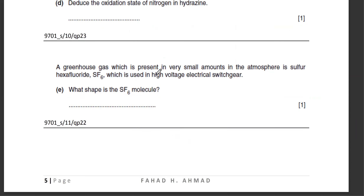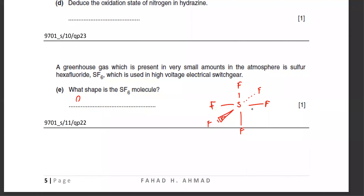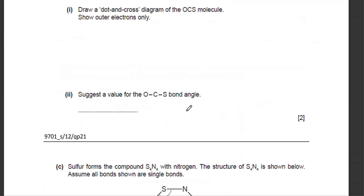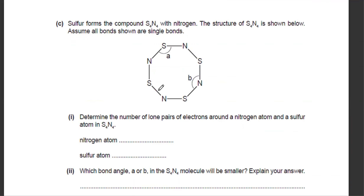For SF6 with six bonds: all bonds repel each other. One bond goes on top, one at the bottom, one on each side, one behind and one in front. All angles are 90 degrees and the shape is octahedral. For PCl5 with five bonds, the shape is trigonal bipyramidal: three bonds fan out in the middle at 120 degrees to each other, with one bond on top and one at the bottom at 90 degrees to the fan.